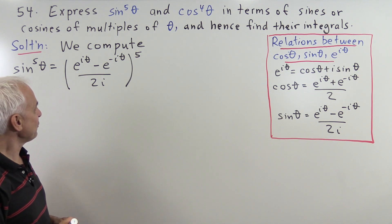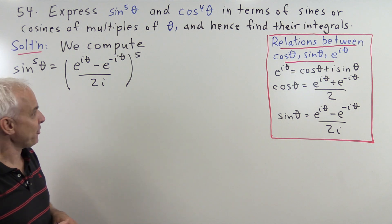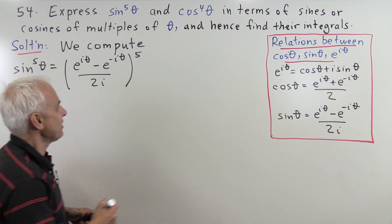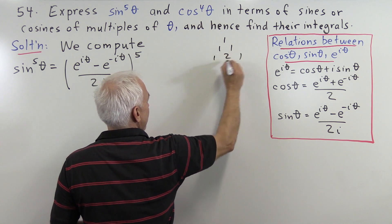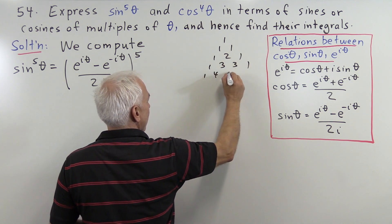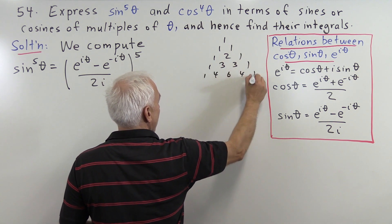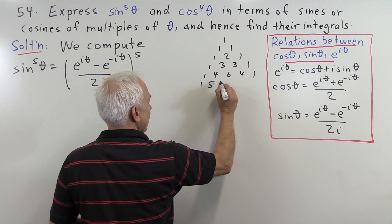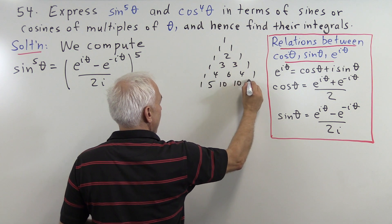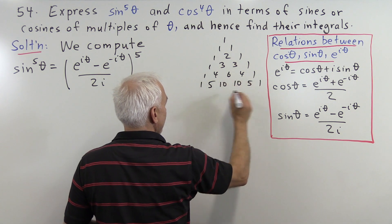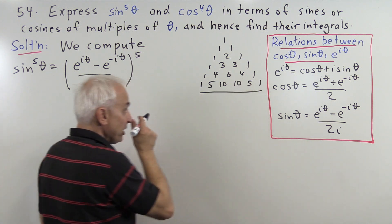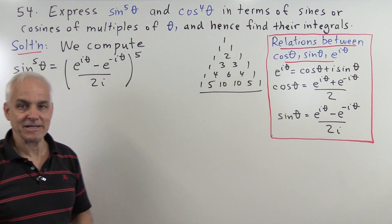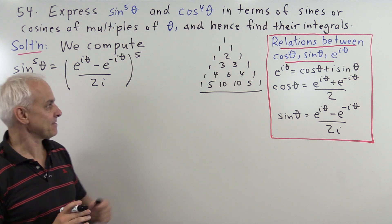We have to remind ourselves about the binomial theorem. Here's Pascal's triangle: 1, 1, 1 2 1, 1 3 3 1, 1 4 6 4 1, and the row that we're interested in is 1, 5, 10, 10, 5, 1. This is the row we need to expand the expression.